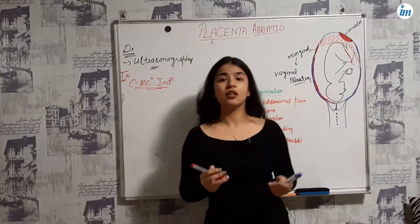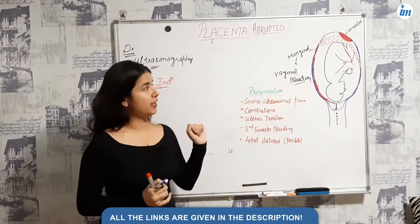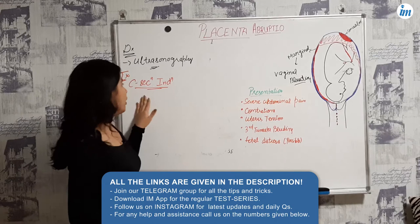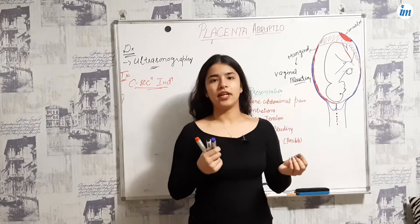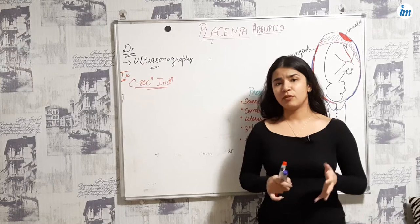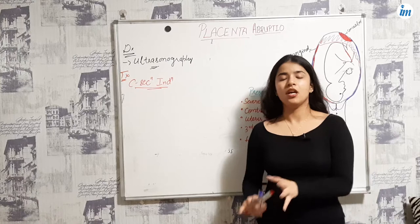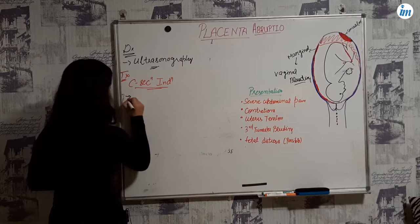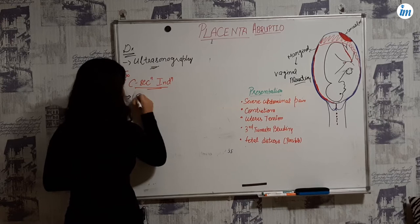For C-section, if there is more severe abruptio — such as the concealed type — you can go for C-section. Another reason is if the fetal heart rate is compromised, then you go for C-section. If there is severe hemorrhage, you also go for C-section. And if the female is having severe hypovolemic shock along with severe pain, you can also go for C-section.